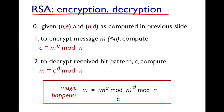Now, to encrypt message m — which is just a number in decimal — we raise it to the power of e and then take mod n. This gives us the cipher text c, so c = m^e mod n.